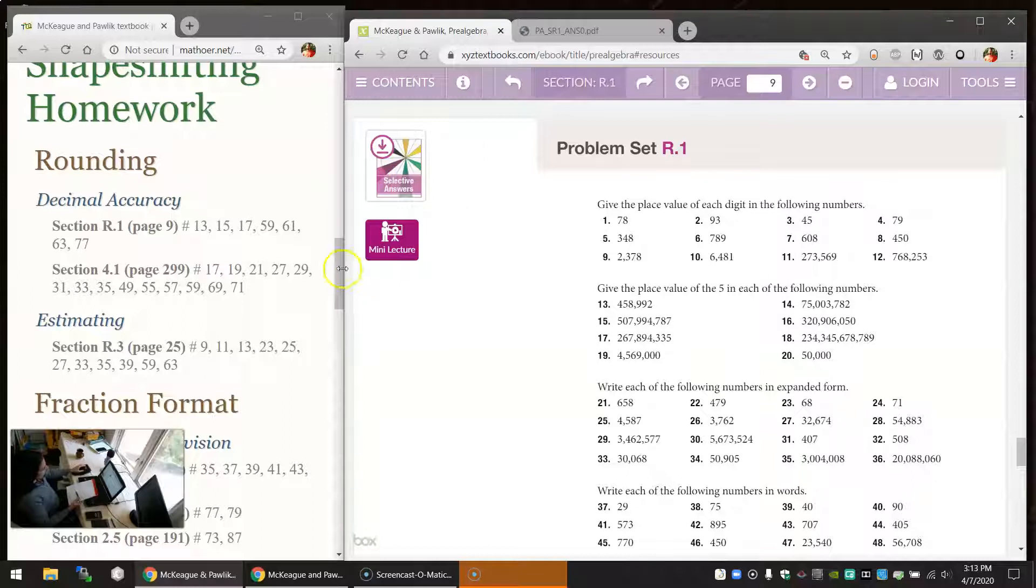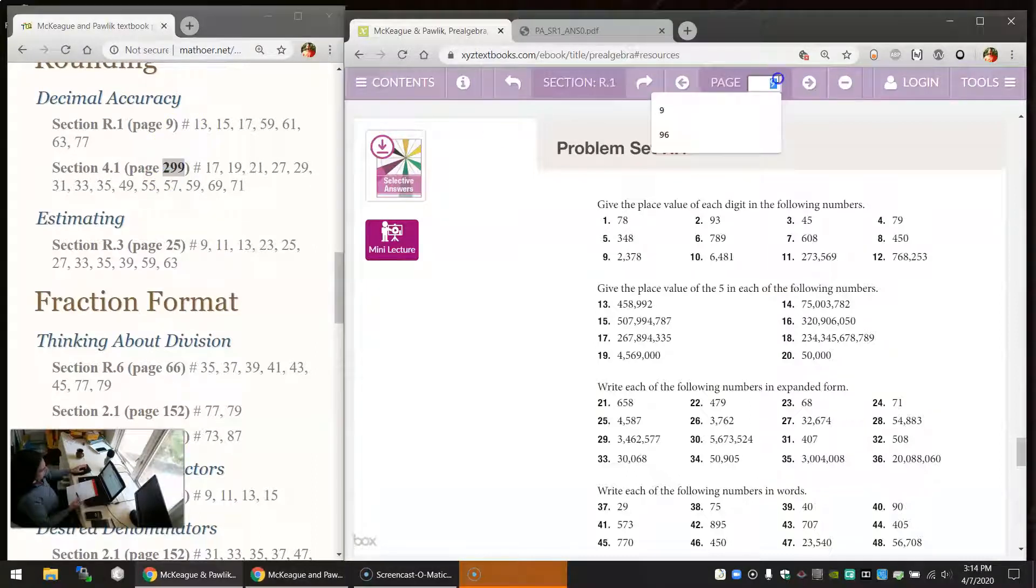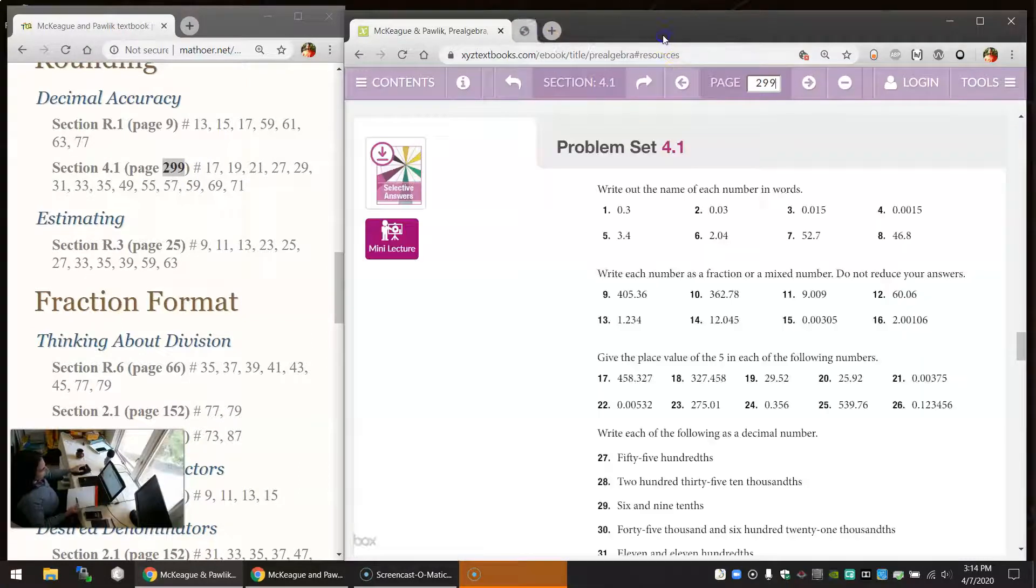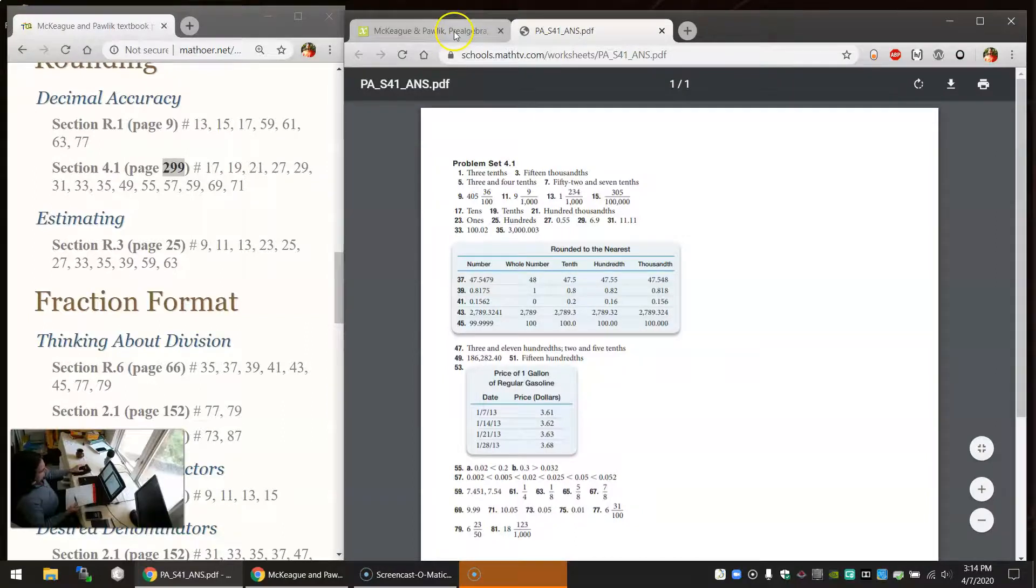When I've done a lot of homework, I might want to scroll down a little bit here. Or if I am done with one section, maybe I want to jump to page 299. When I do that, I would close this one and then get another set of selective answers that I don't want to look at yet.